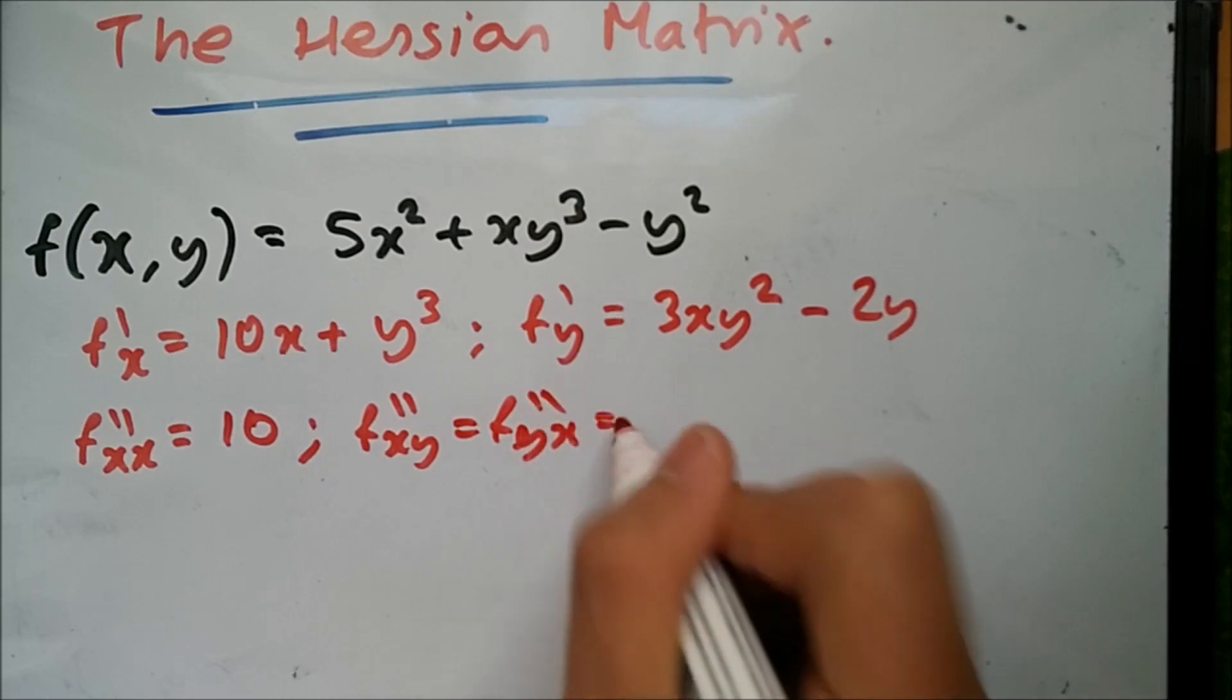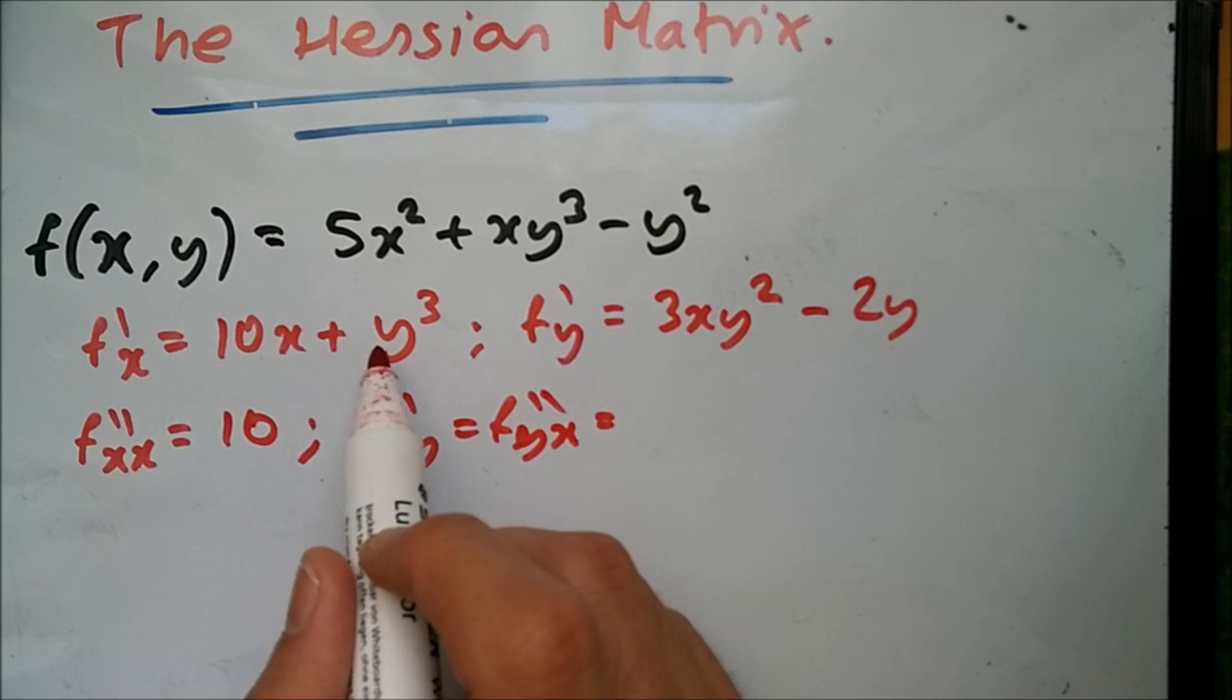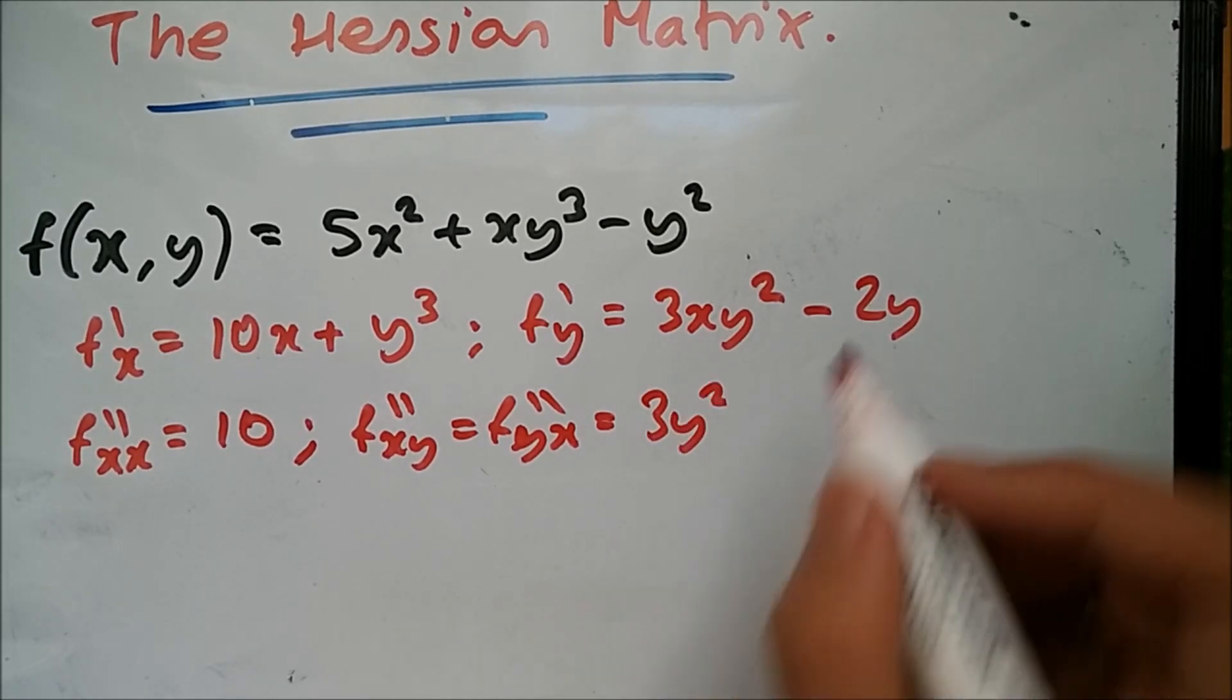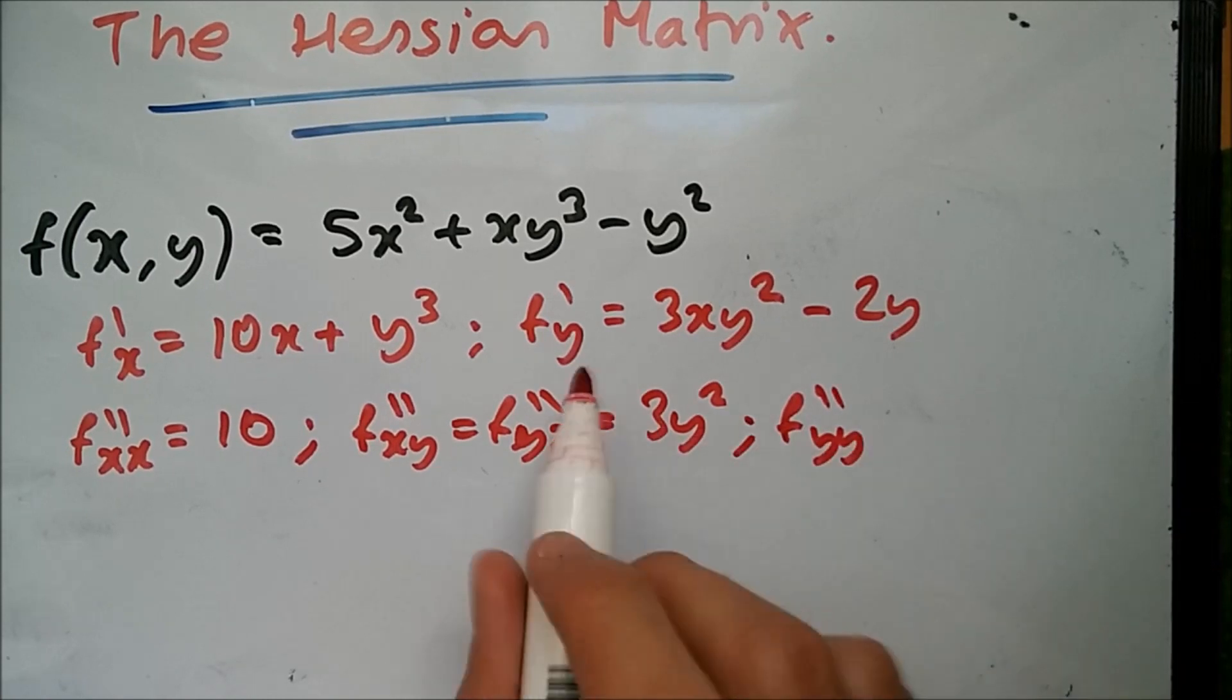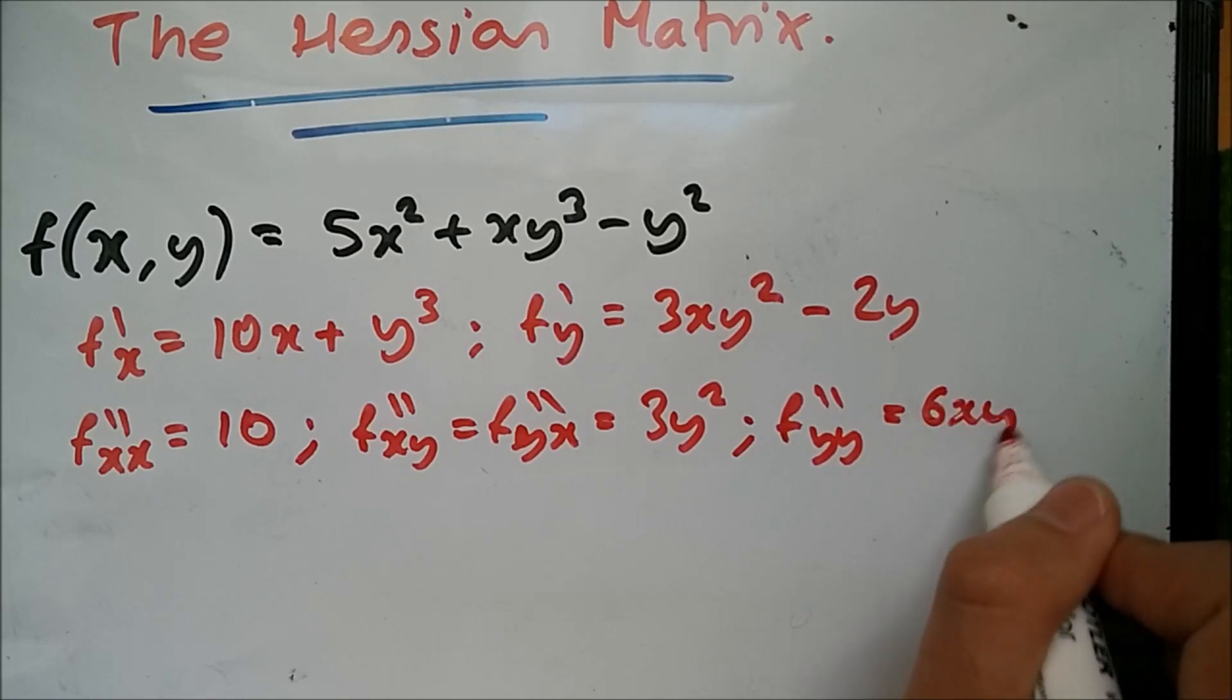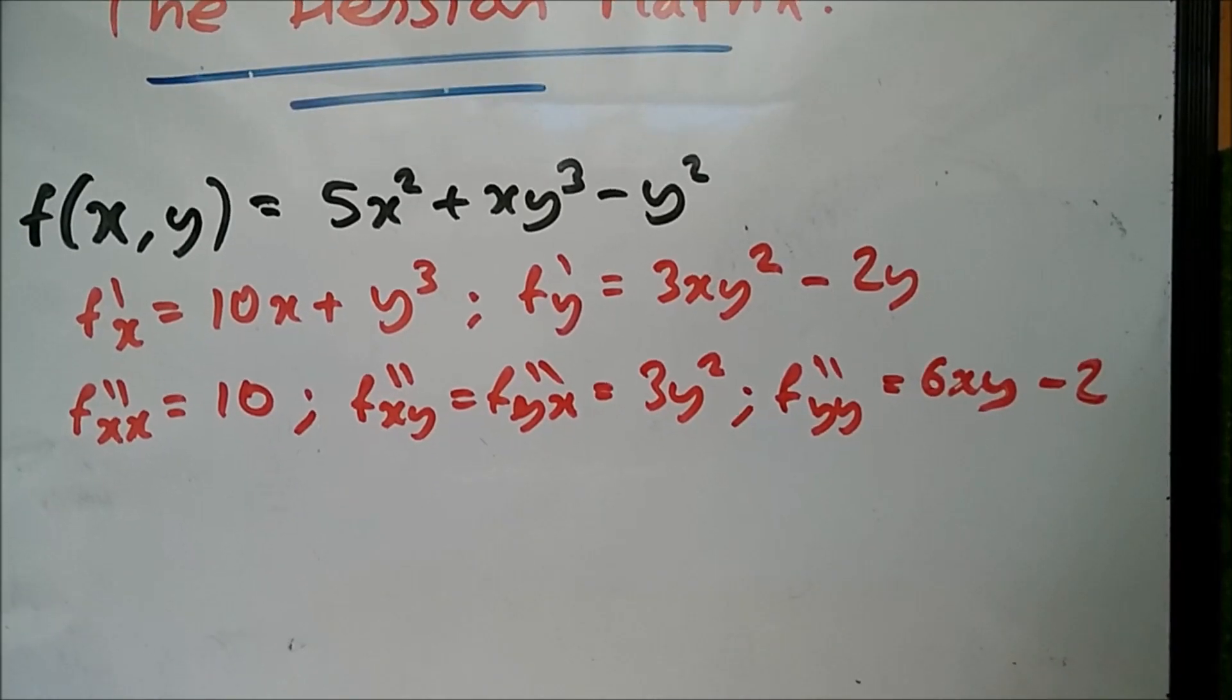Differentiating with respect to y, we get 3y². Lastly, we differentiate with respect to y again. Drop the 2 down to get 6xy - 2.